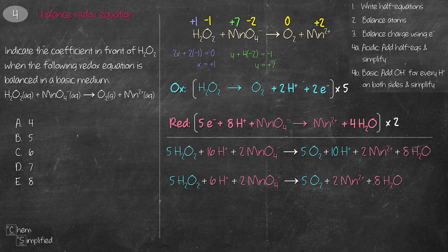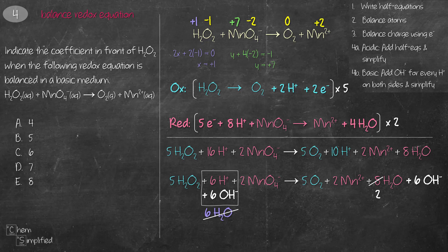Since we need to balance in basic medium, we add OH- for every H+ on both sides. We have 6H+, so we add 6OH- on both sides. The H+ and OH- on the left simplify to 6H2O, and then we simplify H2O on both sides, leaving 2H2O on the right. The question asks for the coefficient in front of H2O2, which is 5, so the answer is B.